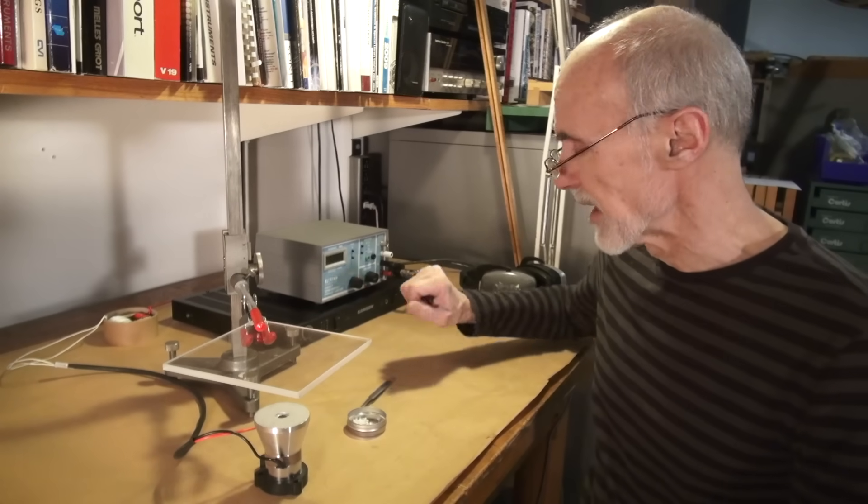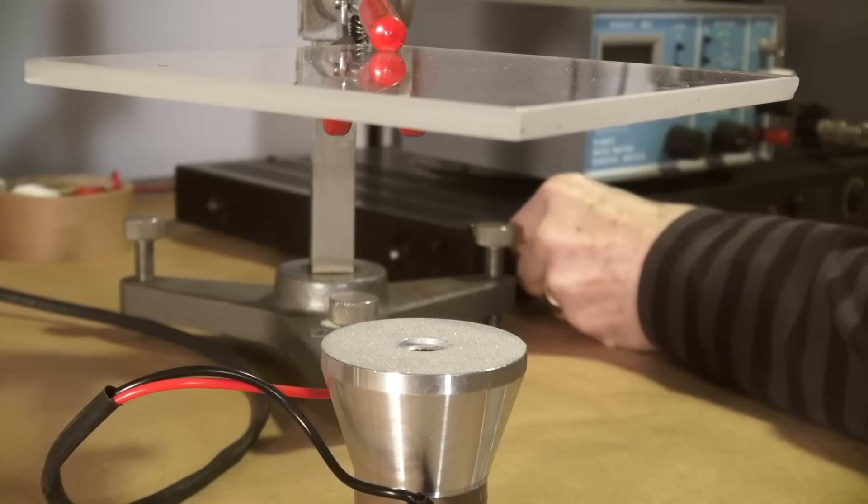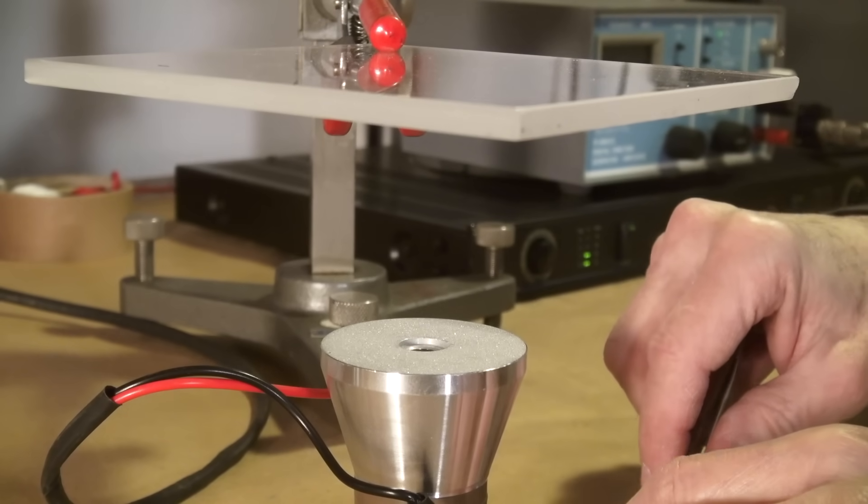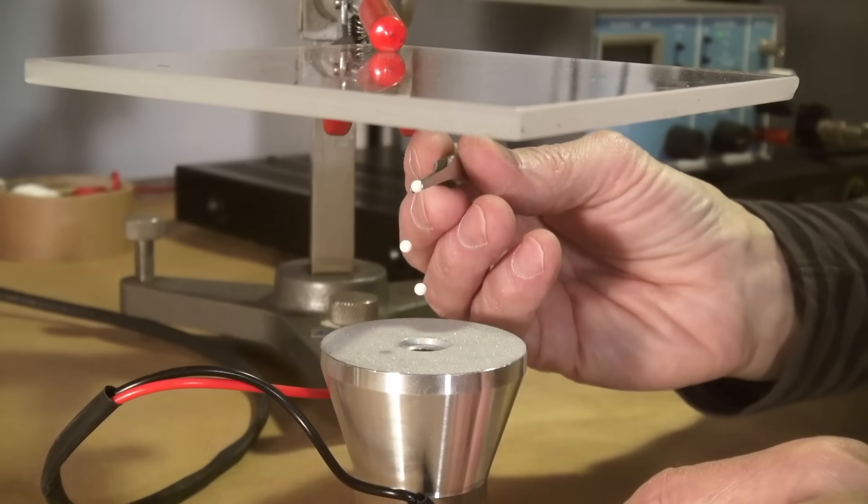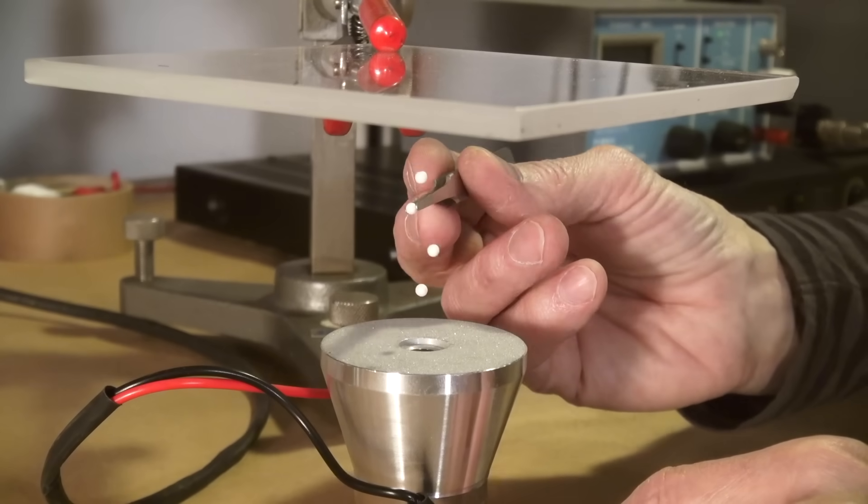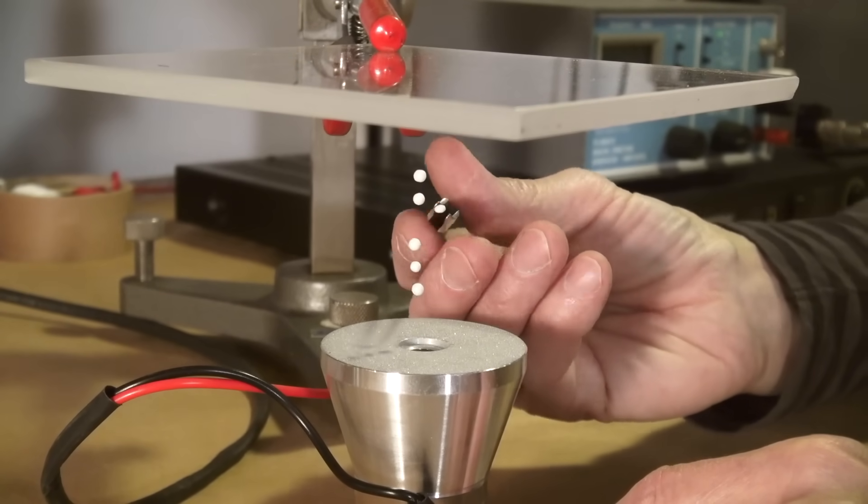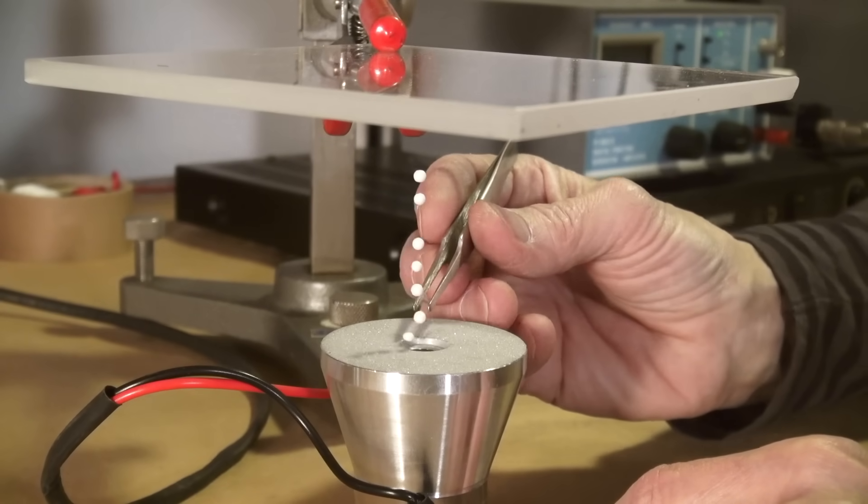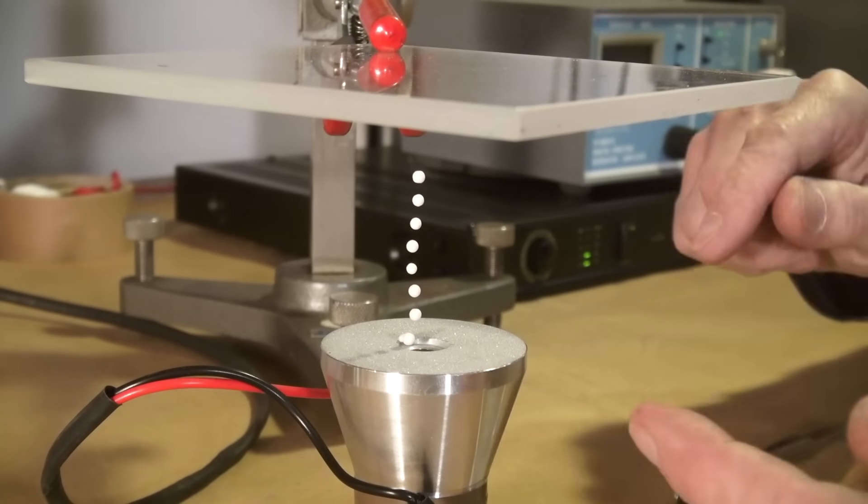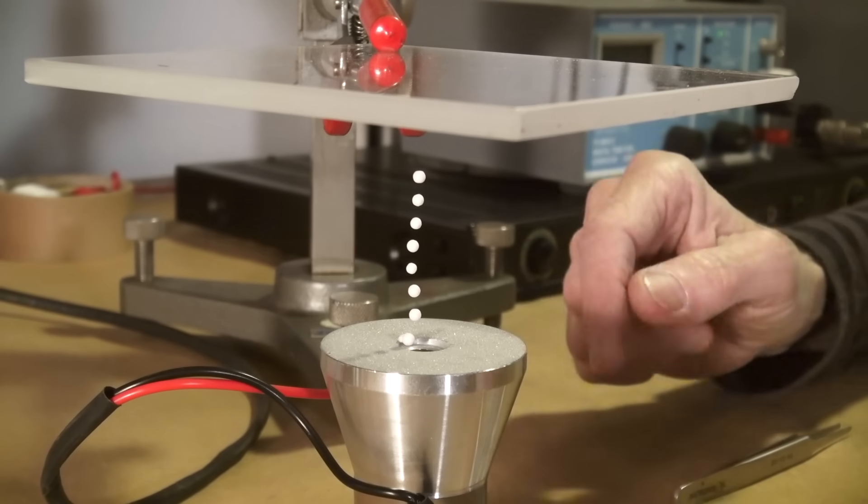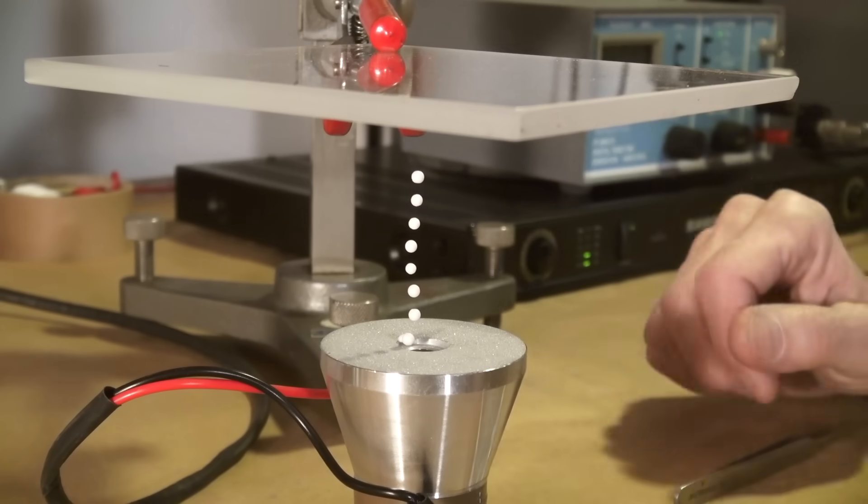So let me turn on the power, and even though I can't hear it, I'm still going to use ear protection. As I said before, the distance between the reflector and the loudspeaker is just right. If I change it, which I'm going to do, you'll see that this standing wave disappears and the balls are no longer suspended there.